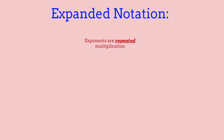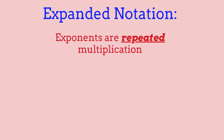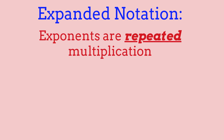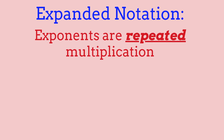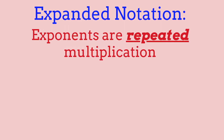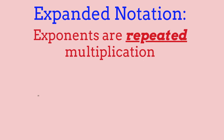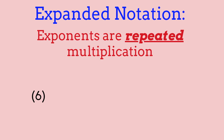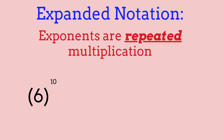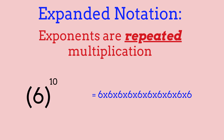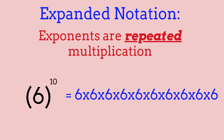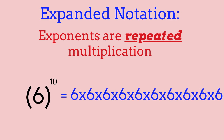So now we're going to be going over expanded notation, also known as repeated multiplication. Exponents are basically repeated multiplication. For example, if we have 3 to the power of 2, all we have to do is multiply 3 two times. Same thing if we had 6 to the power of 10 — we just multiply 6 ten times: 6 times 6 times 6 times 6 times 6, all the way until you've done it 10 times. In conclusion, exponents are basically just repeated multiplication.